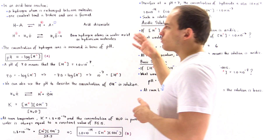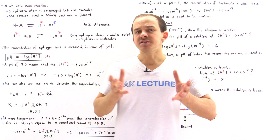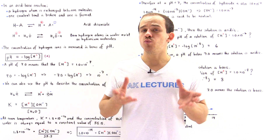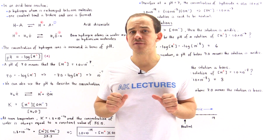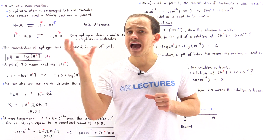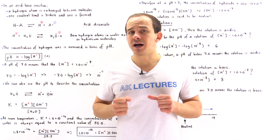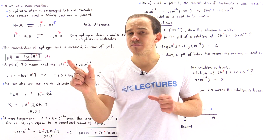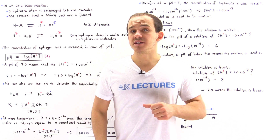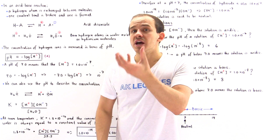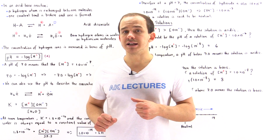An acid-base reaction is a reaction in which we exchange an H+ ion between two different molecules. The acid molecule donates an H+ ion and a bond is broken, while the other molecule — the base — accepts that H+ ion because it has a lone pair of electrons and it forms a covalent bond.